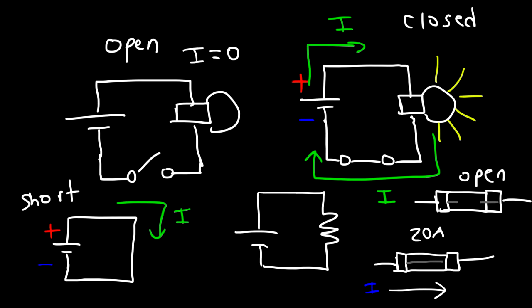Another device that works the same way is a circuit breaker. A circuit breaker is a device where if the current is too high, it turns off the circuit. The advantage of a circuit breaker is that if a high current trips it, you can always turn it back on — you don't have to replace it. With a fuse, once the fuse pops, you have to replace it, and if you don't have another fuse, your device won't work. So the advantage of a circuit breaker is that it will automatically turn off and then you can turn it back on with a switch.